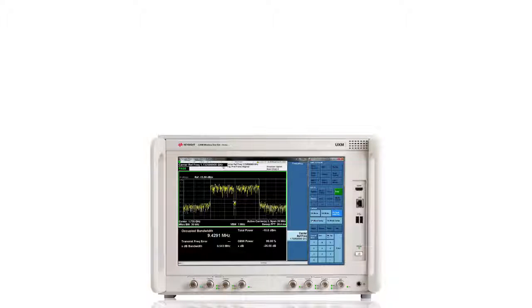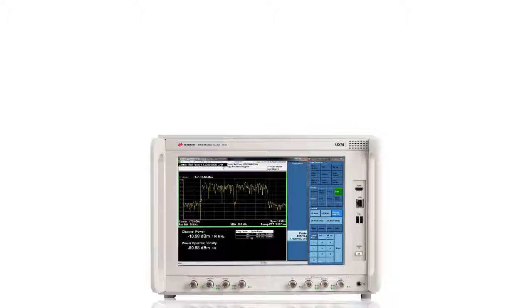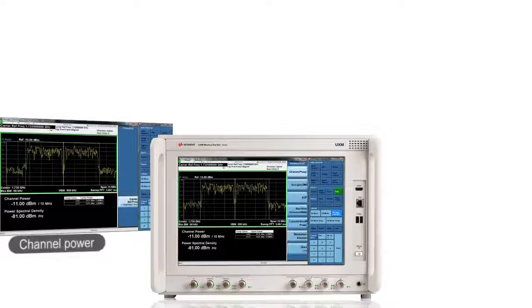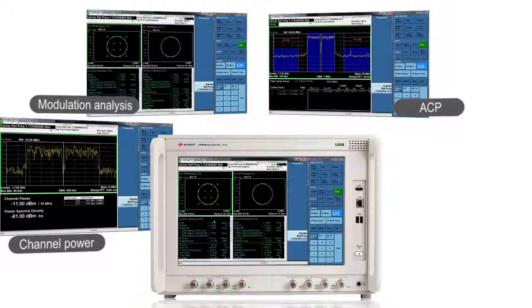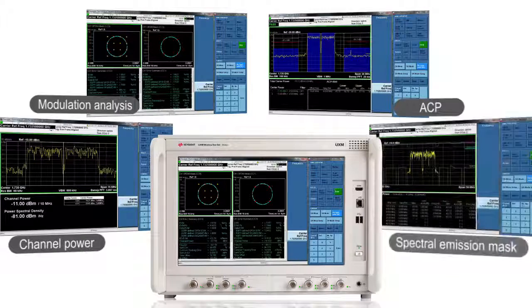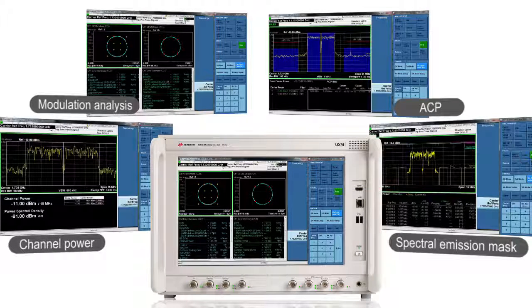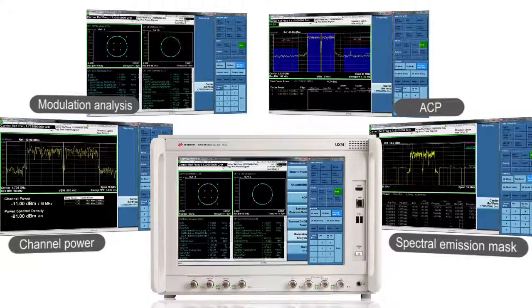A simple touch brings up the X-Series application view, allowing you to explore the rich RF measurements from UXM, including channel power, modulation analysis with constellation and EVM for each channel, adjacent channel power, and spectrum emission mask for the two uplink carriers. All these measurements can be accessed by the touchscreen with the virtual front panel.